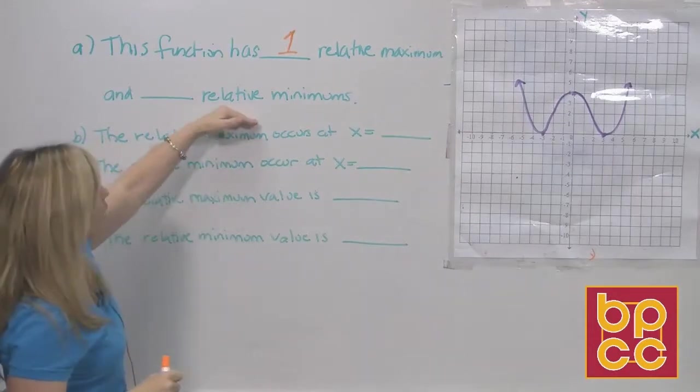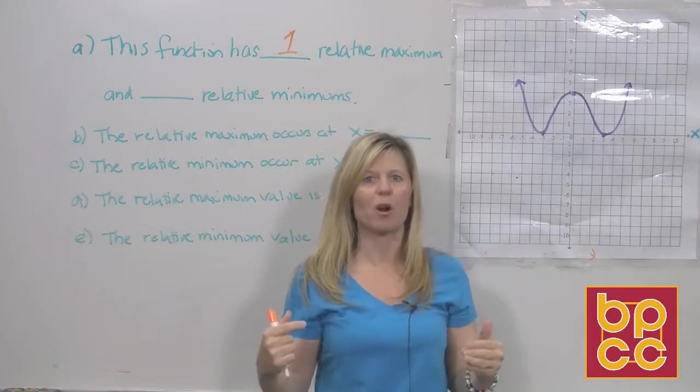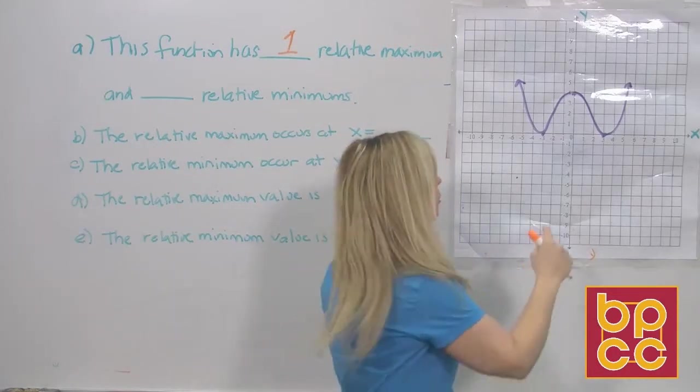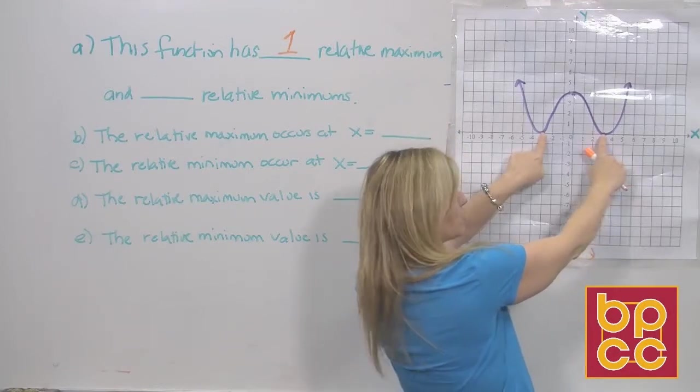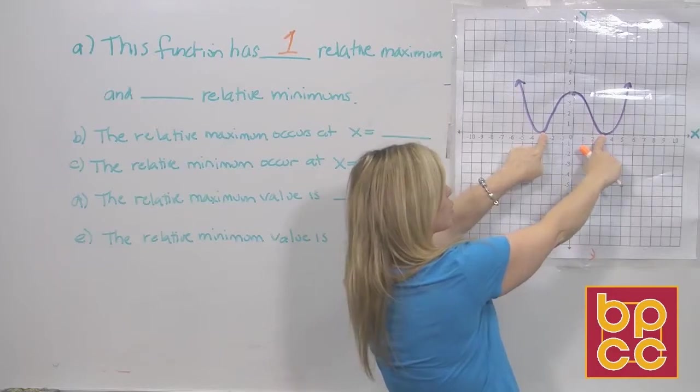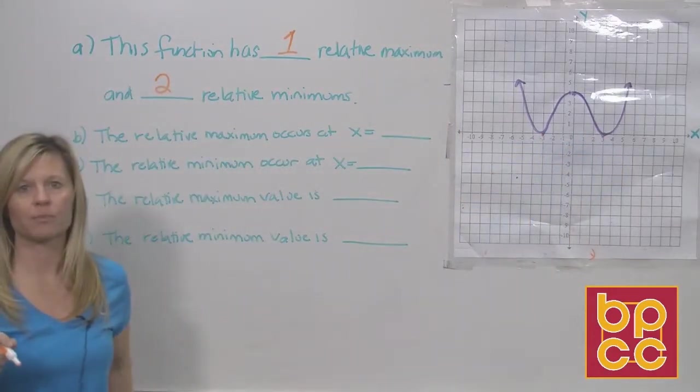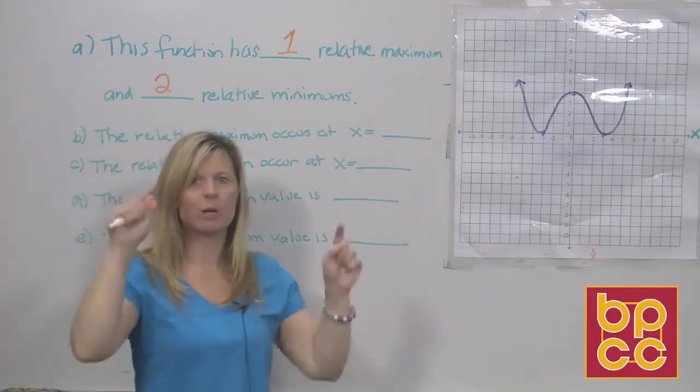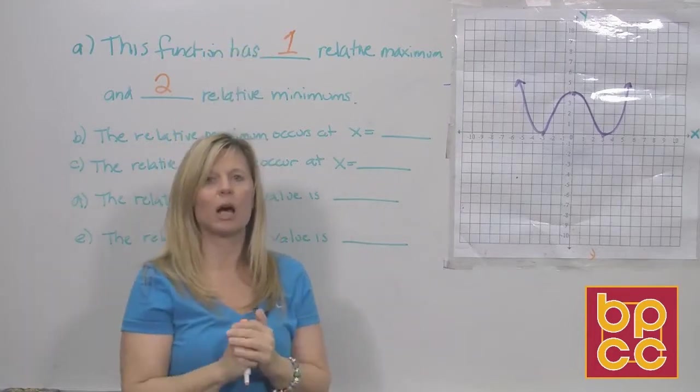Now we want to know about the relative minimum, the lowest points on this graph we could put our finger on. Well it just so happens there's not one, there's two. This point is the lowest and this point is the lowest because they're the same value on the y-axis. So we would say this graph has two relative minimums. These are actual points we could put our finger on. Who's the highest? The maximum. Who's the lowest? The minimum.